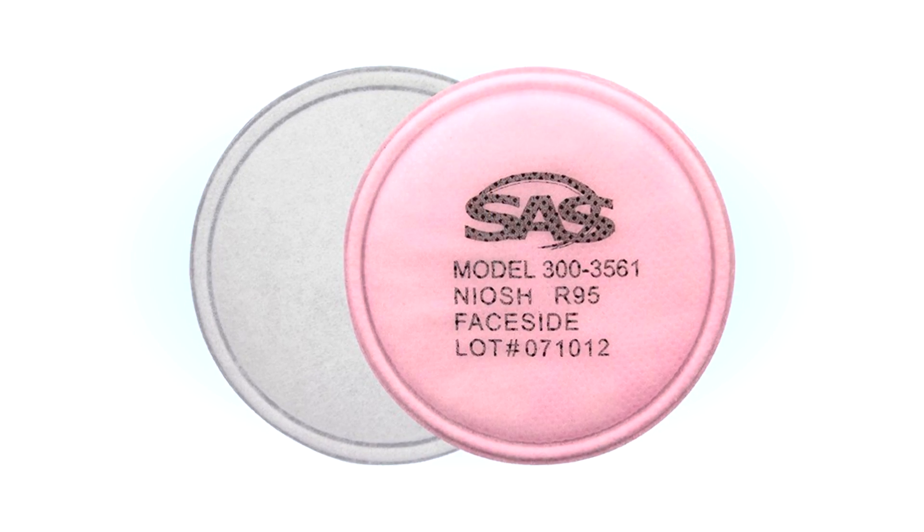N, R, or P. The N means not resistant to oil, the R means resistant to oil, and P stands for practically oil proof. It's not 100% oil proof, but it's as close as you can get to it.